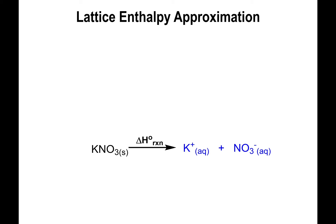The way we approximate this equation is by using other definitions we've used in the past, specifically for the salt. Notice that we have the salt in solid form, and the cation and anion components — which may remind you of the lattice enthalpy, where we have the solid salt and the gaseous ions. Notice here we're going from the salt to the gaseous ions, so this equation on the left side is the negative of the lattice enthalpy.